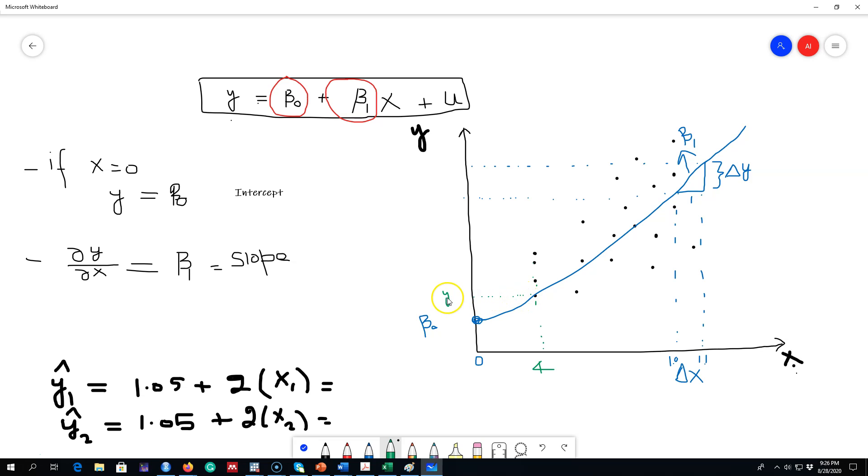But see, what was the original value? The original value was right here. This was the original value, but we predicted that y1 was going to be this, so we under-predicted the value. So there is an error in our prediction. Let's call this error u hat one. This is the u that we are measuring.